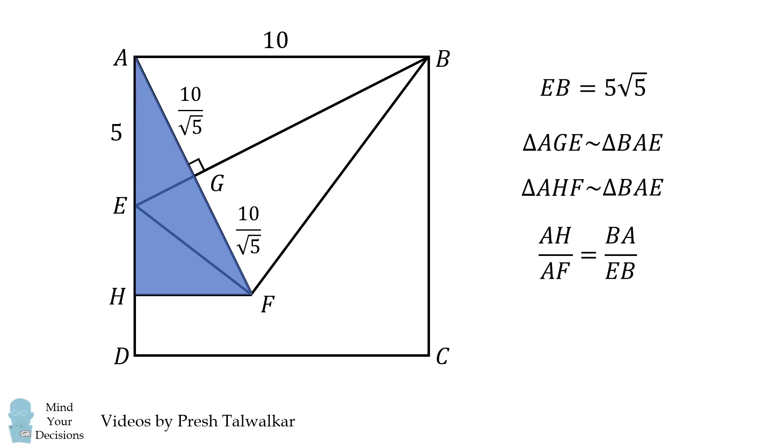This means we have the following ratios that are equal. From here, we substitute in the known values and we can simplify and solve for AH. We get that AH is exactly equal to 8.